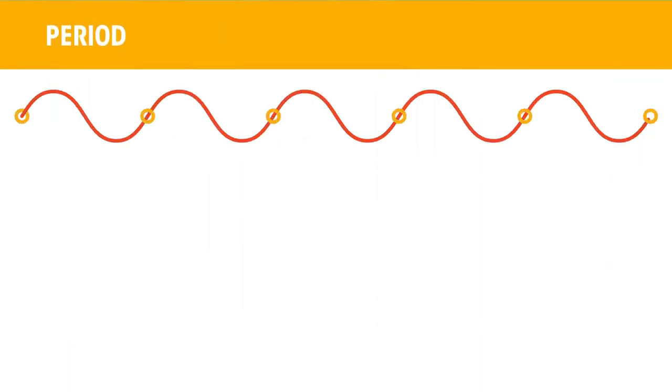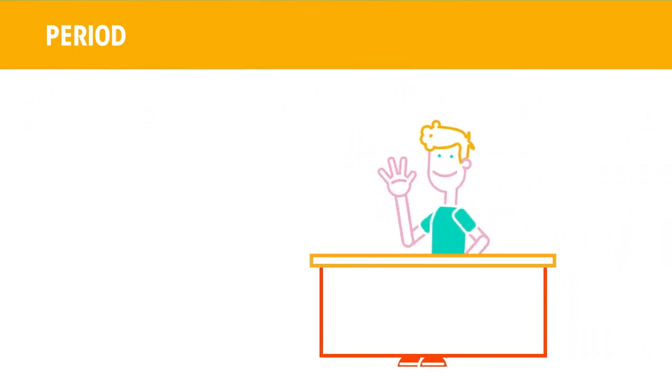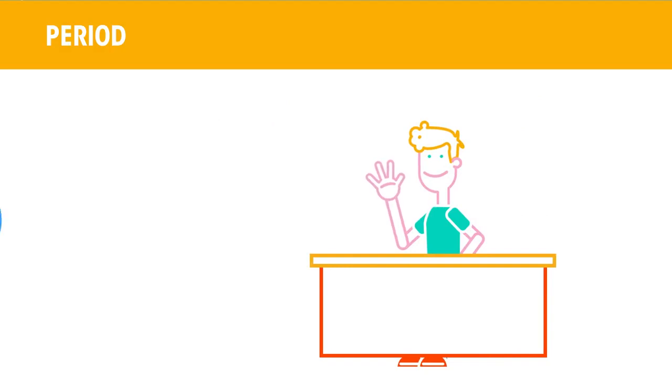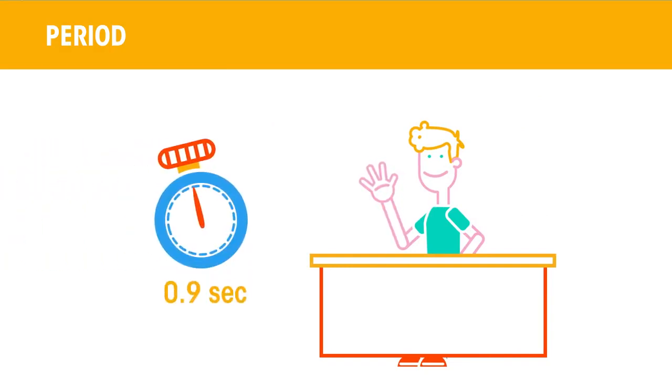The period of a wave is the time for one complete cycle, so the time taken for one person to stand up, wave and sit down. This would be measured in seconds.